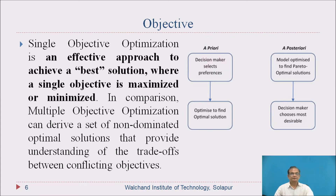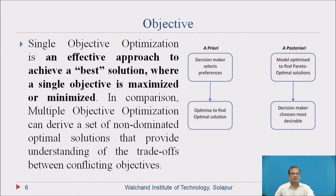Single objective optimization is an effective approach to achieve a best solution. Our objectives can be classified into two: single objective optimization and multiple objective optimization. Single objective optimization is an effective approach to achieve a best solution where a single objective is maximized or minimized. In comparison, multiple objective optimization can derive a set of non-dominated optimal solutions that provide understanding of the trade-offs between conflicting objectives.